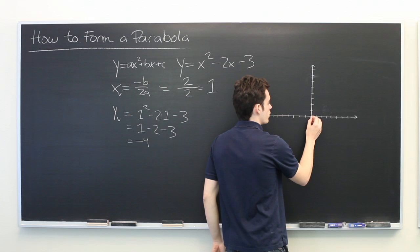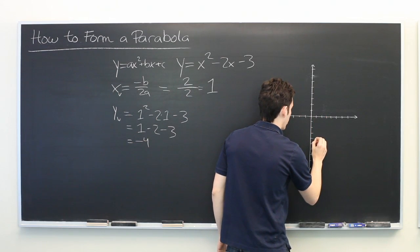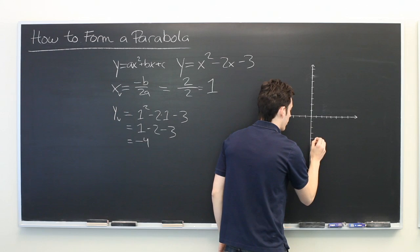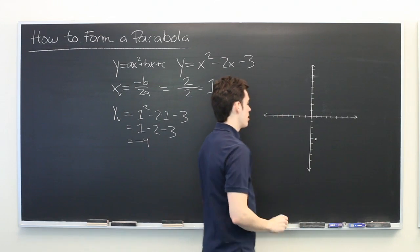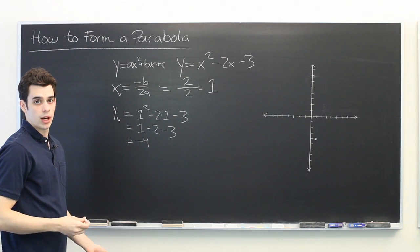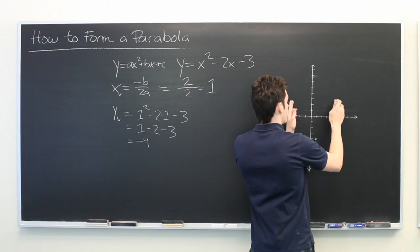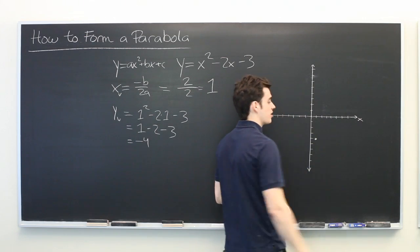So we go over to x equals 1, y equals negative 4, put a point right there. That's our vertex. Another piece of interesting information that we would want to know is where are the x-intercepts. Where does the graph of this cross the x-axis?